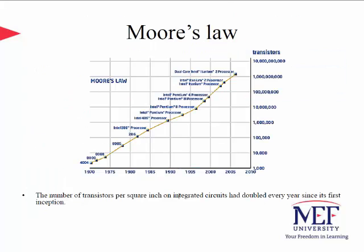All this discussion about complexity and the number of transistors in CPUs and ICs today brings about an interesting question: how fast is the number of transistors per square inch on IC surfaces growing? The number of transistors per square inch on ICs had doubled every year since their first inception. This observation was made in 1965 by Gordon Moore, co-founder of Intel, who predicted this trend would continue for the foreseeable future. In subsequent years the pace slowed a bit, but data density has doubled approximately every 18 months. Most experts, including Moore himself, expect Moore's Law to hold for at least another two decades.